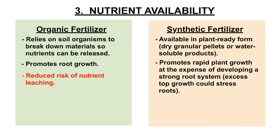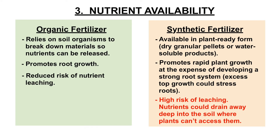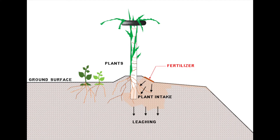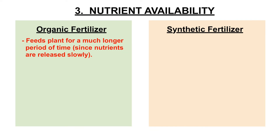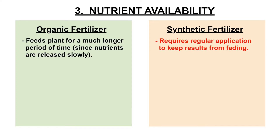Since nutrients in organic fertilizers are held in organic matter and depend on microorganisms for release, the risk of leaching is very small compared to synthetic fertilizers. The risk of leaching is higher with synthetic fertilizers — nutrients don't last long and are either absorbed by the plant or carried away by water, easily draining deep into the soil where plants can't access them. Since nutrients in organic fertilizers are released very slowly, they can feed the plant for a much longer period of time, whereas synthetic fertilizer nutrients are quickly released and require regular application to maintain results.